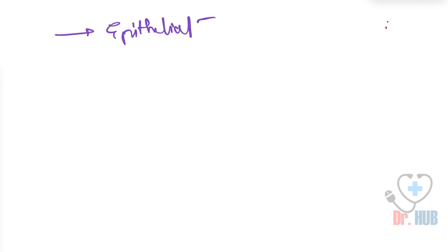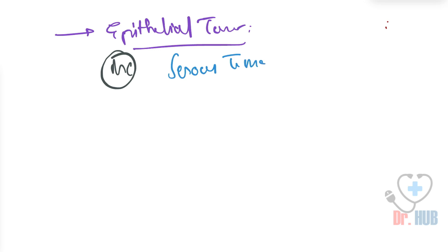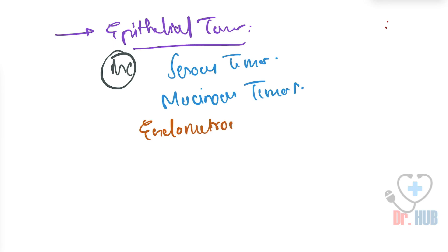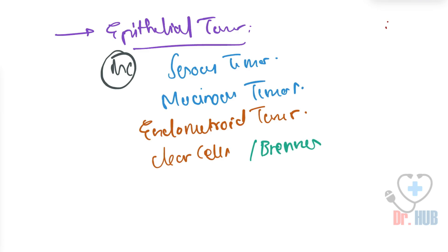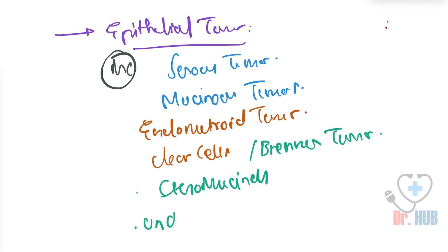To begin with, we look at the epithelial tumors. One important thing to note is that this is the most common category. It includes the serous tumors, the mucinous tumors, the endometroid tumors, the clear cell tumors, the Brenner's tumors, the seromucinous, as well as the undifferentiated carcinoma.